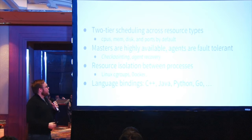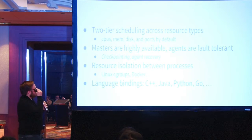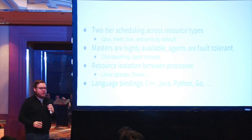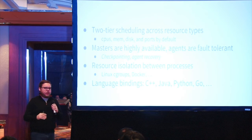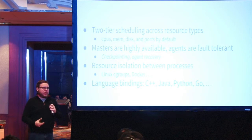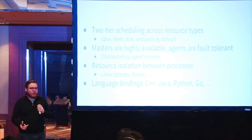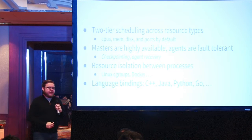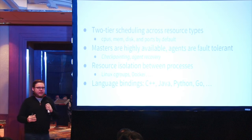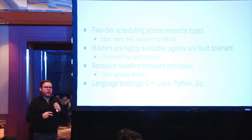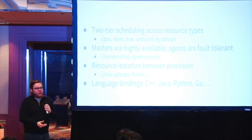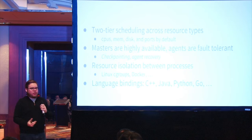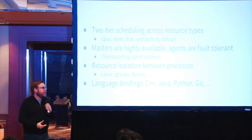Mesos does this by having two-tier scheduling. What that means is it takes resources from individual hosts — CPU, memory, disk, network ports — and advertises those to these distributed systems. The frameworks' scheduler can then decide whether it has work to do or not, and accept or decline the resources that are offered.